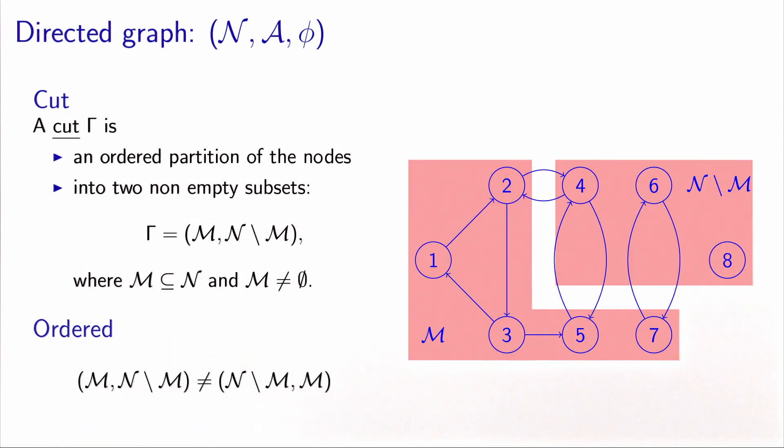Here is an example where we have a directed graph with eight nodes, and we have selected nodes one, two, three, five and seven to be in the set M, let's say to be on the left bank of the river, and the nodes four, six, eight, which are the remaining nodes, which are on the right bank of the river.